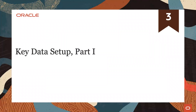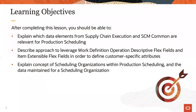Hello and welcome to the training for the new production scheduling cloud application. This is the third of 12 lessons. The objectives for this lesson are to learn about the key data elements from supply chain execution and SCM common that are relevant for production scheduling, to understand how descriptive flex fields on work definition operations and extensible flex fields on items can be used to model customer specific attributes, and which data must be maintained within production scheduling itself.